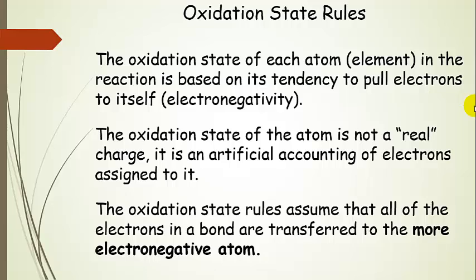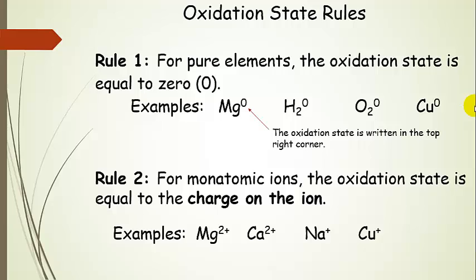You don't have to explain the reason for the oxidation state rule — we're going to learn how to use them. Later on, when you discuss electrochemistry, you will see more about where this comes from. So let's go through our rules. The very first rule is that for pure elements, regardless of what they are, the oxidation state is equal to zero. We often write these oxidation states in the top right-hand corner, just like we would put a charge, but these are not charges — these are oxidation states.